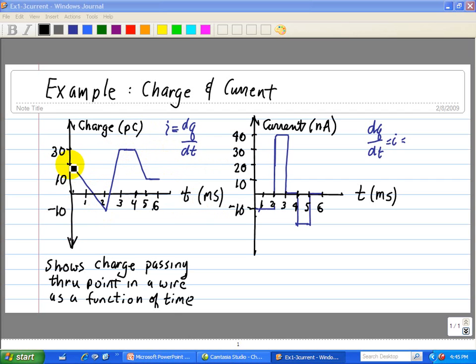So here we're going from 10 picocoulombs to minus 10 picocoulombs in 2 milliseconds. So here we have our definition of current, which is dq dt. And we're just going to calculate the slope at each of these points of this graph. So we went from 10 to minus 10 from 0 to 2 milliseconds.